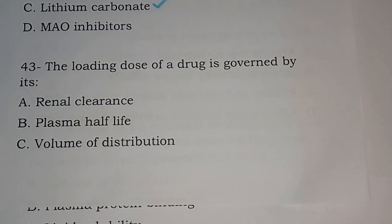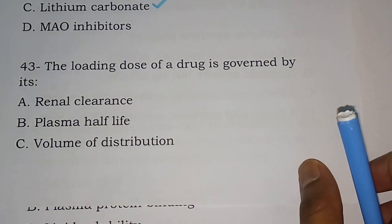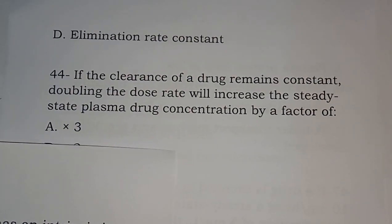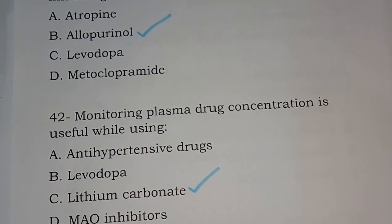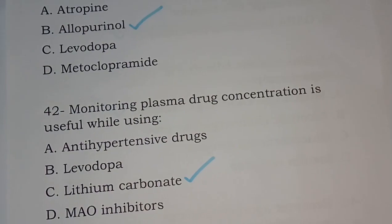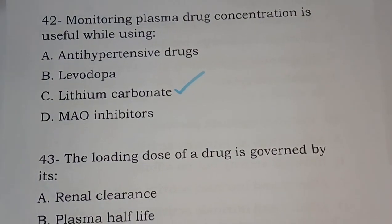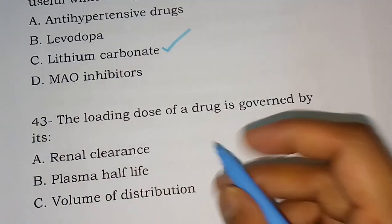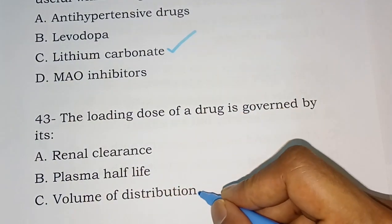Question 43: The loading dose of a drug is governed by its renal clearance, plasma half-life, or volume of distribution. The correct answer is option C, volume of distribution.